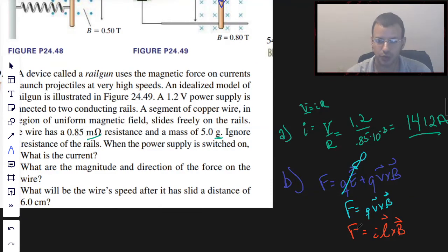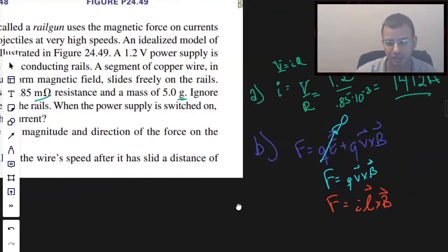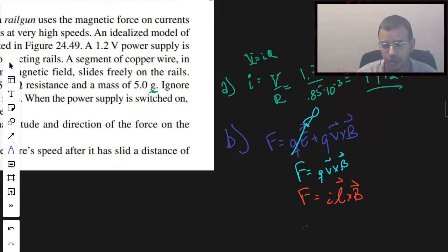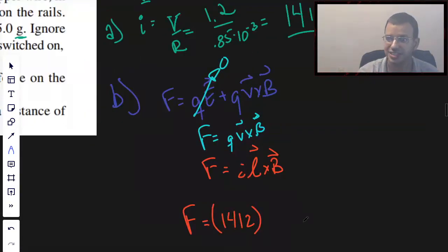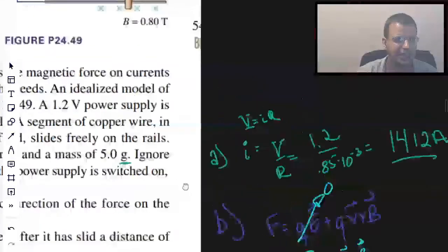So that's going to give us the direction. Now for the magnitude, we're going to use the second equation here. The force is going to be equal to the current, which is big, 1412, times the length of the wire, which is 0.15 meters, 15 centimeters.